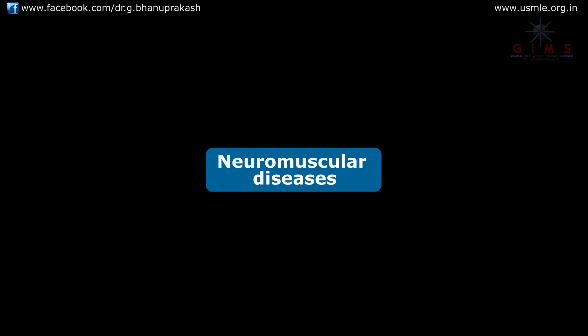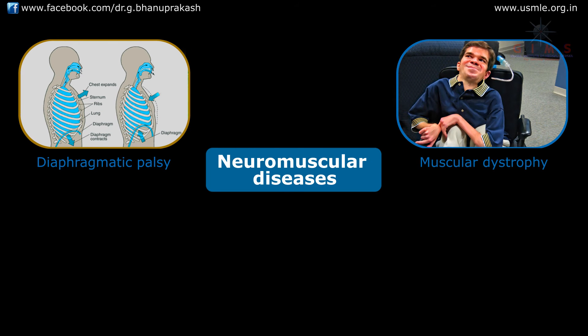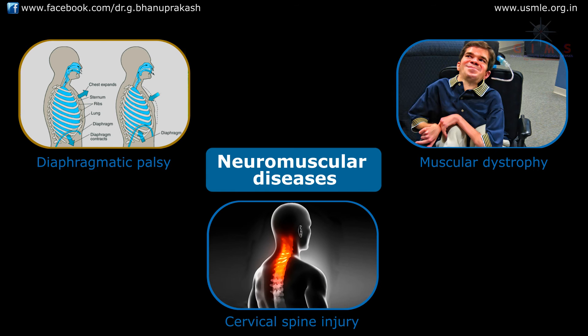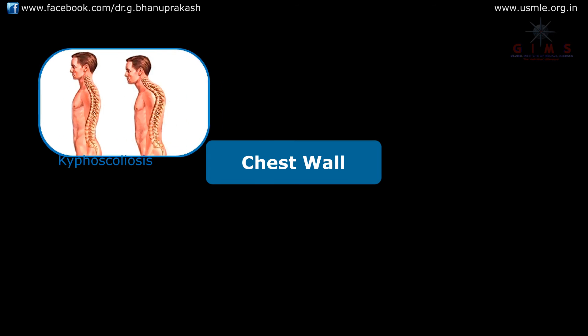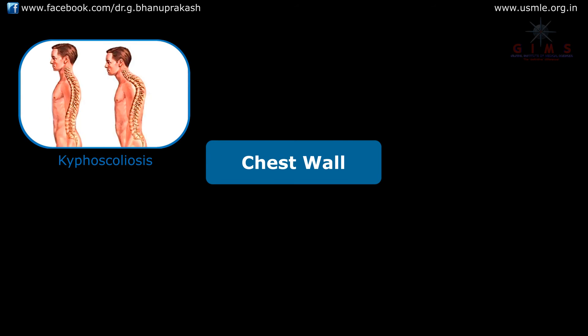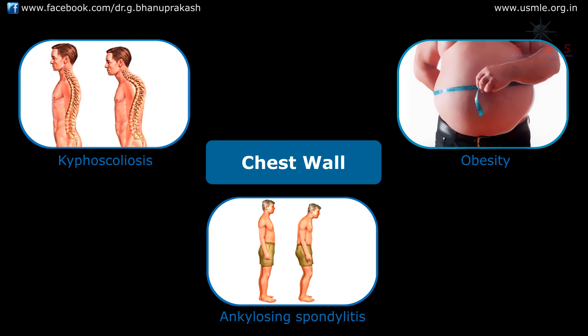The neuromuscular diseases include diaphragmatic palsy, muscular dystrophy, and cervical spine injury. The chest wall disorders include kyphoscoliosis, obesity, and ankylosing spondylitis.